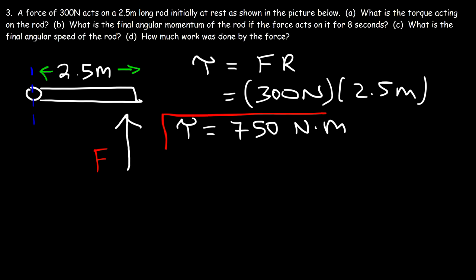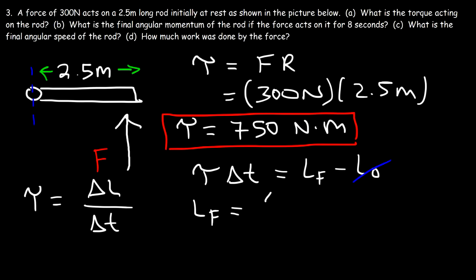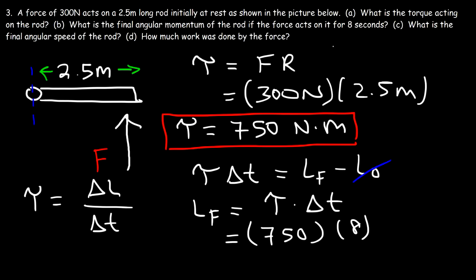Now let's move on to part B. What is the final angular momentum of the rod if the force acts on it for 8 seconds? Net torque equals the change in angular momentum divided by the change in time. Multiplying both sides by delta T gives torque times time equals final momentum minus initial angular momentum. The rod was initially at rest, so the initial angular momentum is 0. Therefore, the final angular momentum is simply torque times time: 750 times 8 equals 6,000 units.